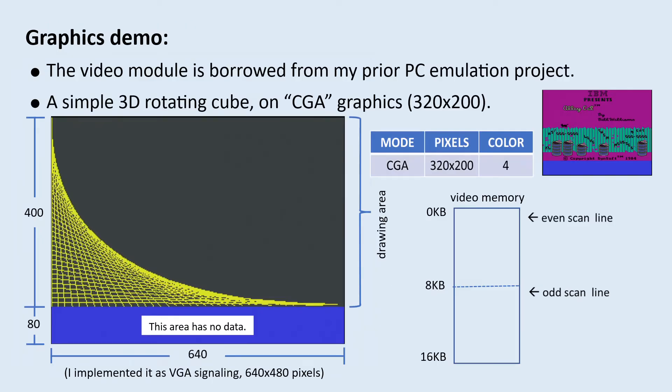For the graphics, I reused a video module from a prior project. It is a 320x200 CGA resolution. Underneath, I actually implemented a 640x480 VGA scan signals. The drawable graphics area is 640x400 and I fill the bottom 80 scan lines with just blue color; they are not used to represent any data.